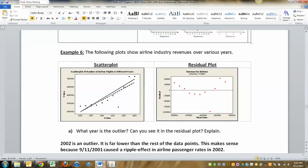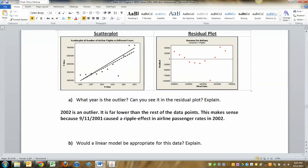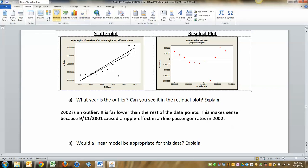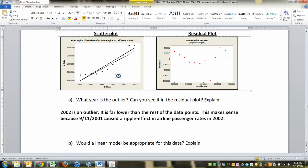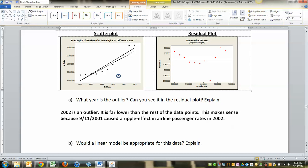So I have the following plots show airline industry revenues over various years. Now, what year was an outlier? This is the scatter plot over here on the left, this is the residual plot on the right, but hopefully in both of them you can spot the outlier from a mile away. And I'll actually insert a little circle around him so you can see him. He's right there. There we go. So that's where the little guy is, the outlier.